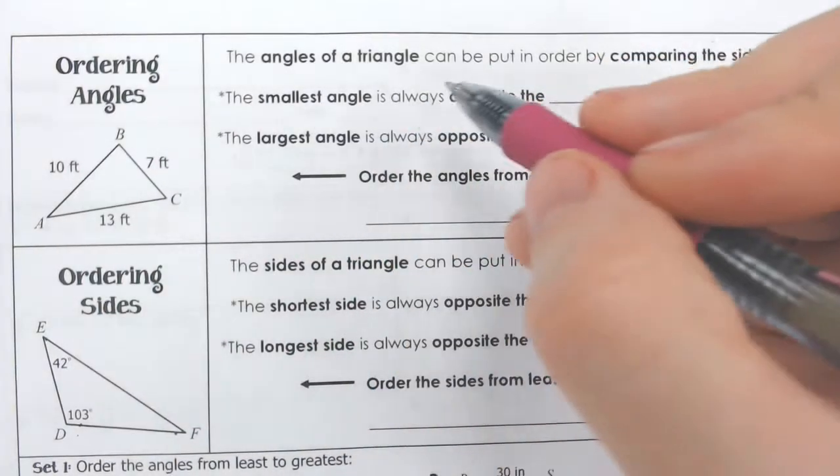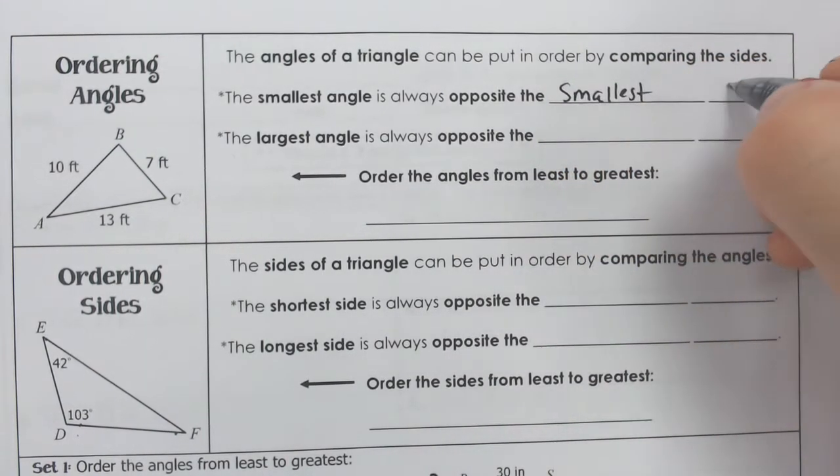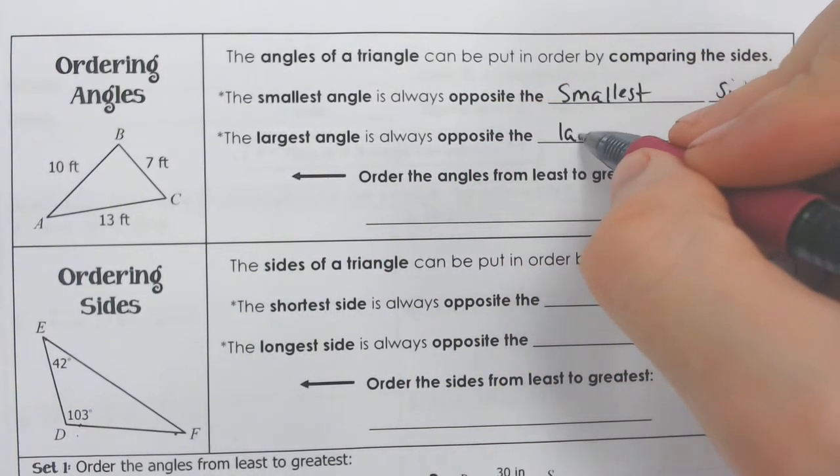So the smallest angle is always going to be opposite of the smallest side. And conversely, the largest angle is always going to be opposite of the largest side.